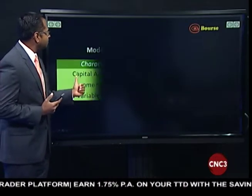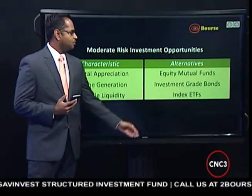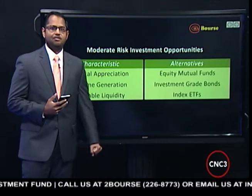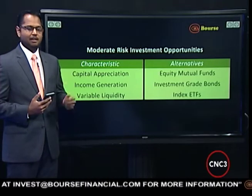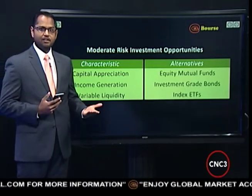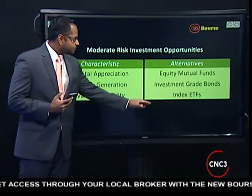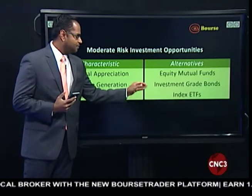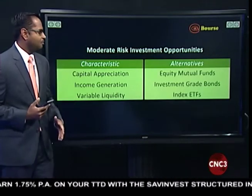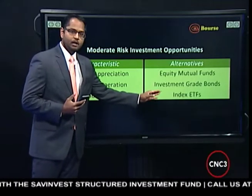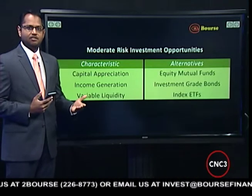For the moderate-risk investor, somewhere in the middle of the risk and return spectrum, there are alternatives such as equity mutual funds, investment-grade bonds, and index exchange-traded funds. In the case of investment-grade bonds, these are bonds with a credit rating of BBB minus and higher. For example, Trinidad and Tobago currently has an investment-grade rating by Standard & Poor's. Bonds in the investment-grade space typically offer returns at the current time of between 4% to 5%, depending on the time to maturity. Index exchange-traded funds and equity mutual funds are effectively like buying the stock exchange.